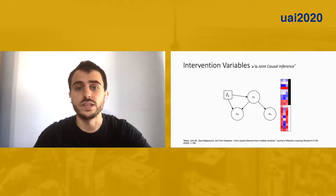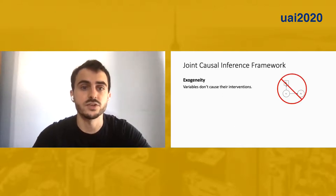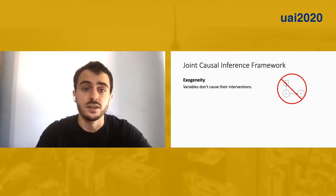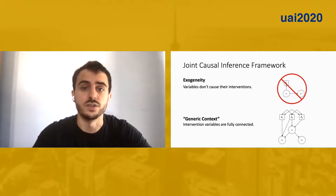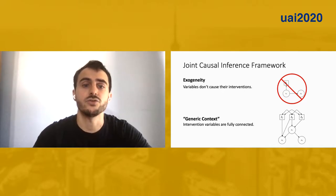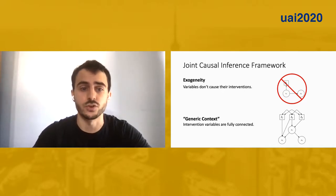However, to use one of these algorithms, we must be able to incorporate two key pieces of background information. First, since our data depends on the intervention, we need to incorporate an exogeneity assumption that variables don't cause their interventions. Second, since only one intervention variable is non-zero at a time, we know that the intervention variables are fully connected. In our paper, we show that this type of background information can be very naturally incorporated into a permutation-based structure learning approach.